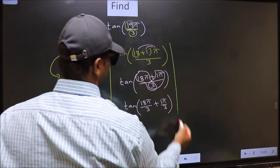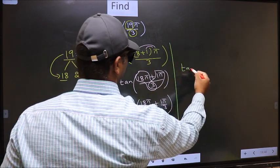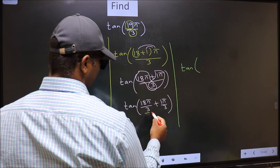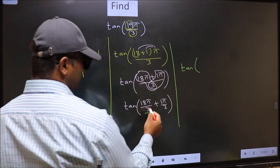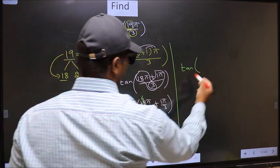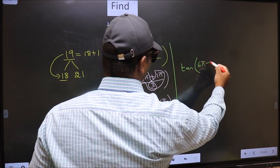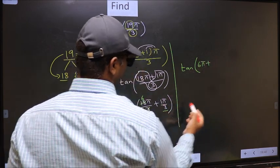Now we should cancel. 3 into 18 is 6. We get tan(6π + π/3).